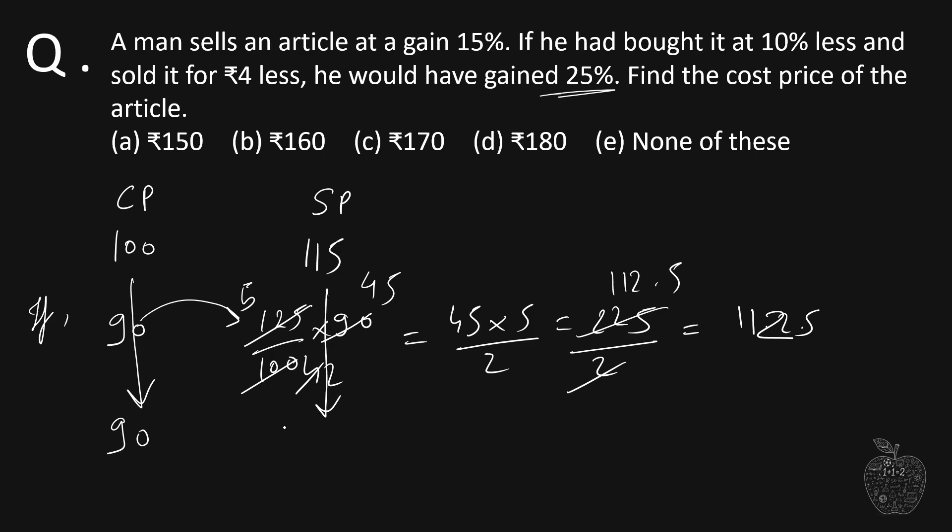But the question here says that he sold it at 4 rupees less. If this is less, that means 115 minus 112.5, how much is this? 2.5. It is 2.5 less, but this 2.5 equals 4, because the question tells us that he sold it for 4 rupees less.